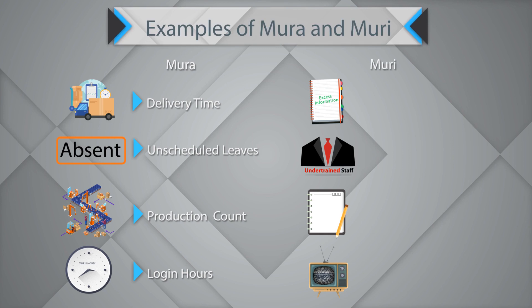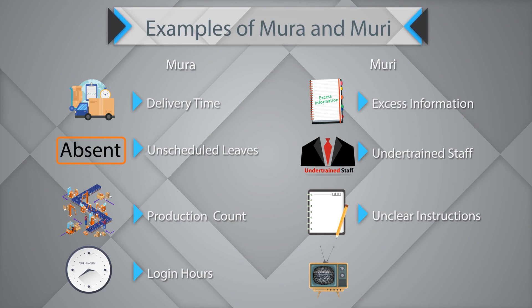Muri is unreasonableness. Examples include having unnecessary information being sought from the customer which is not required to process a particular transaction, under-trained staff — expecting high productivity from under-trained staff is unreasonableness — unclear instructions, where it is unreasonable to expect standard outcome, and poor communication, where it is unreasonable to expect correct results from the business. So Mura is about inconsistency or variation, and Muri is about unreasonableness.